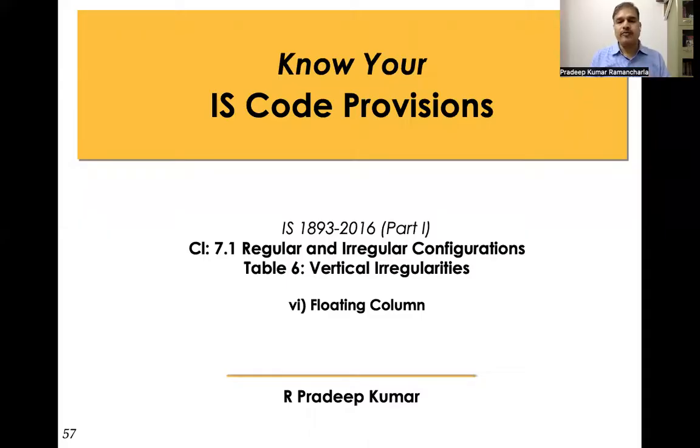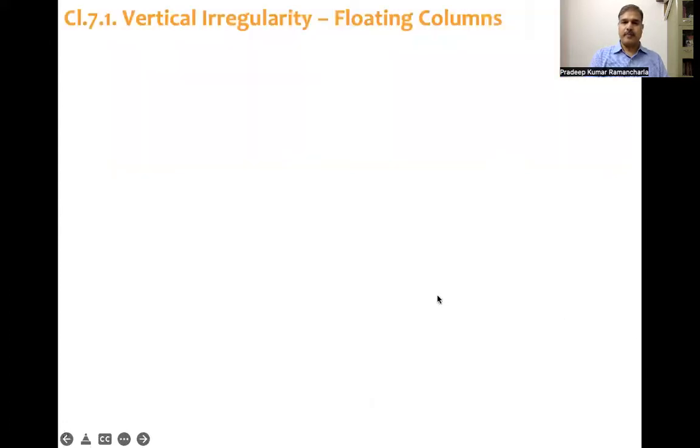This is part of the 'Know Your IS Code' provisions short lecture series. In this short lecture, I will explain floating columns — when do we say a column is a floating column, and what are the code provisions to safeguard the building which has floating columns. Floating column is one of the vertical irregularities given in Table 6, item number 6.